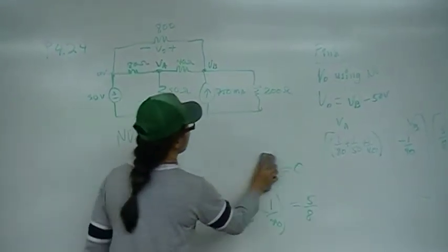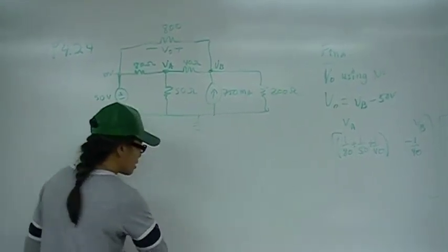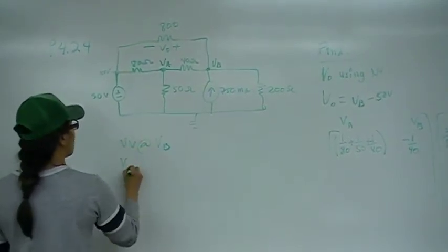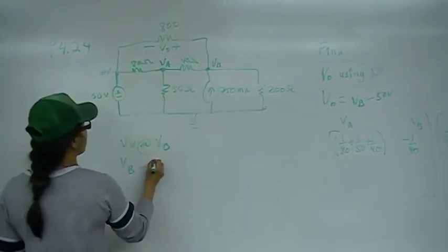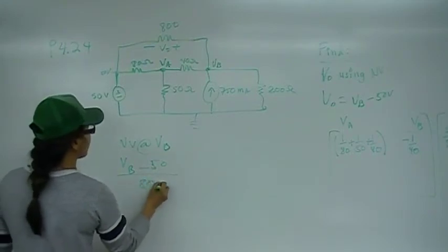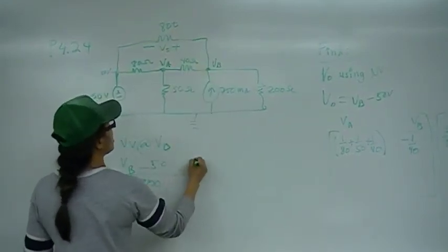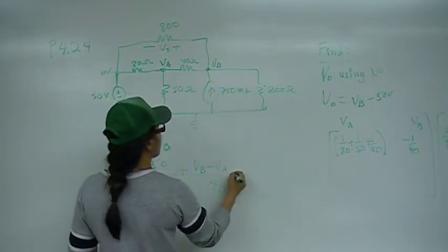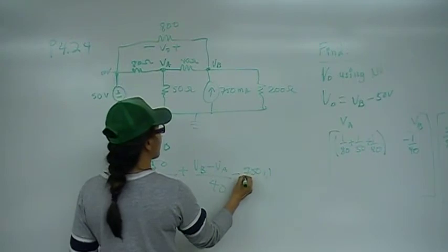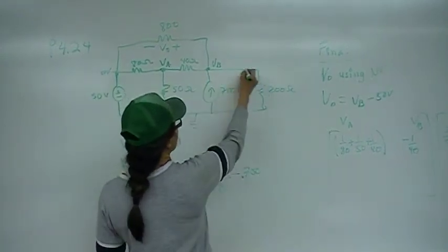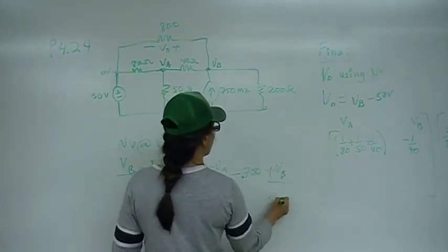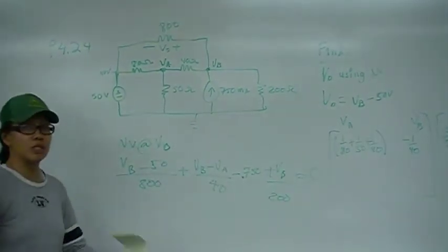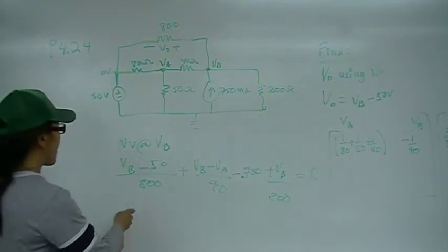That's one equation and two unknowns, so let's do node voltage at VB to get our second equation. At node VB: VB minus 50 over 800 — that's that branch current. Then this branch current is VB minus VA over 40. Now this branch current is going to be negative 750 milliamps, or negative 0.750. And this branch current is VB over 200. These sum up to zero. Remember, the node voltage method is really KCL, where we sum the branch currents.